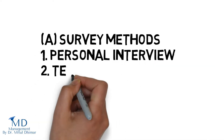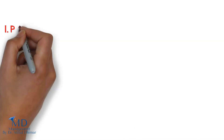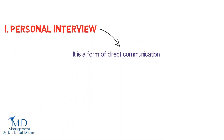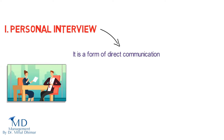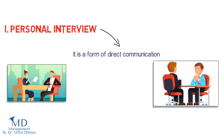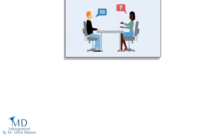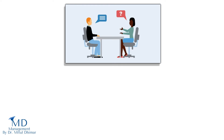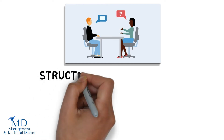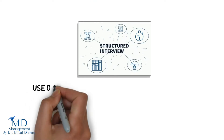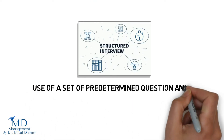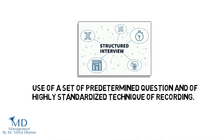We are going to study four survey methods. One: personal interview. A personal interview is a form of direct communication in which an interviewer asks respondents questions in a face-to-face situation. The method of collecting information through personal interview is usually structured or unstructured. Structured interview involves the use of a set of predetermined questions and a highly standardized technique of recording.